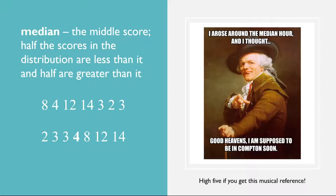An alternative to the mean is the median. The median is the middle score in the sense that half the scores in the distribution are less than it and half are greater than it. The simplest way to find the median is to organize the scores from lowest to highest and locate the score in the middle. Consider, for example, the following set of seven scores: 8, 4, 12, 14, 3, 2, 3. To find the median, simply rearrange the scores from lowest to highest: 2, 3, 3, 4, 8, 12, 14. In this case, the median is 4 because there are three scores lower than 4 and three scores higher than 4.